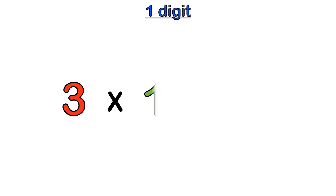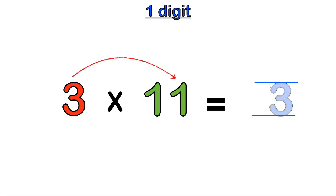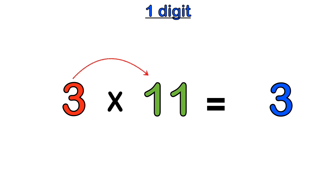The simplest example is when we have a one-digit number multiplied by 11. For example, three multiplied by 11. We multiply three by each digit in 11: three times the last one gives three, and three times the first one gives three. So the answer is 33.